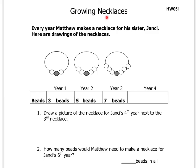On this side we have growing necklaces. Every year Matthew makes a necklace for his sister, Jancy. Here are drawings of the necklaces. They tell us how many beads are made for each year that he's made a necklace. So the first year there were three beads. The second year there were five beads, as you can see here. The third year there were seven beads.